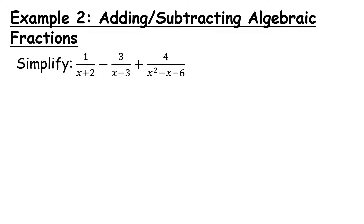The next example looks at adding and subtracting algebraic fractions — a similar method is used for both, and in this example we have both adding and subtracting. We're going to use a common denominator, because in order to add or subtract any fractions you need to have a common denominator. The first thing we're going to do is look at the denominators we have: x plus 2, x minus 3, and here we have a quadratic — x squared minus x minus 6.